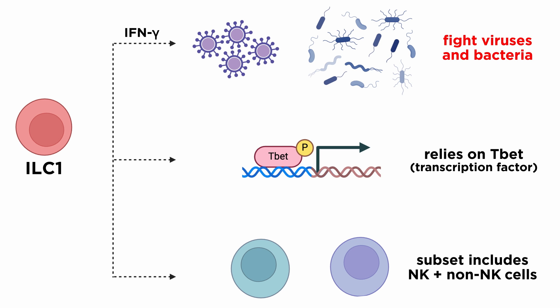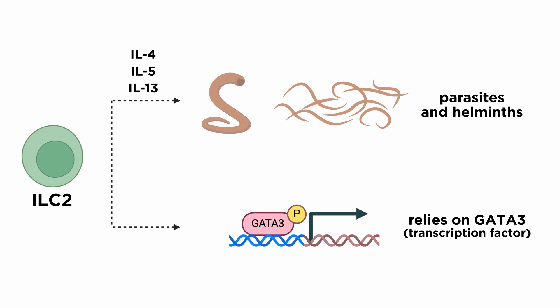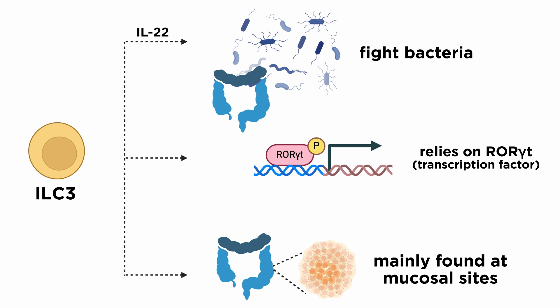ILC1s are weakly cytotoxic and function as a first line of defense against infections with viruses and certain bacteria. They produce interferon gamma as their main cytokine and are dependent on the transcription factor TBET for this function. This subtype includes NK cells and non-NK cells. Tissue resident ILC2s are defined by their capacity to produce type 2 cytokines: IL-4, IL-5, and IL-13. They provide an innate immune response to parasites such as helminths. ILC3s are primarily found at mucosal sites and are involved in the innate immune response to extracellular bacteria, as well as the containment of intestinal commensals. They mainly produce IL-22, which is a key cytokine involved in maintaining intestinal homeostasis and promoting the proliferation of intestinal stem cells.